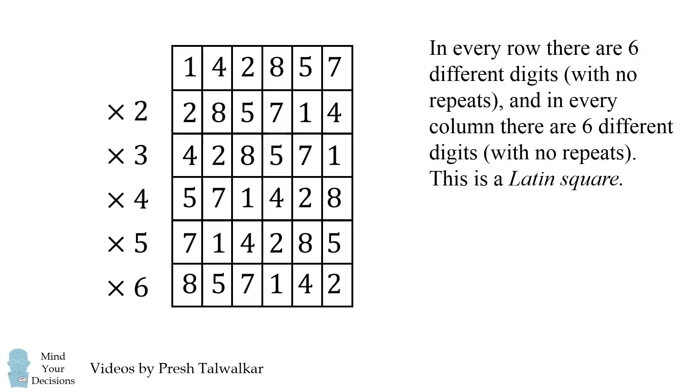And there you go. In every row there are six different digits with no repeats, and in every column there are six different digits with no repeats. This is a Latin square.